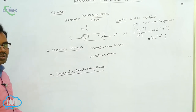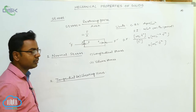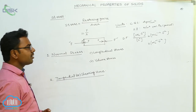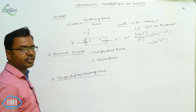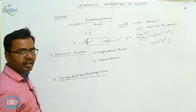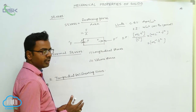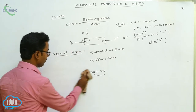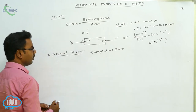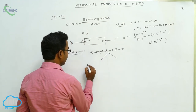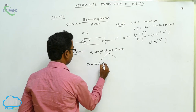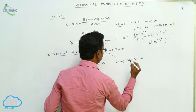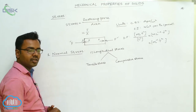Normal stress is the stress acting perpendicular to the surface of the body, divided into longitudinal stress and volume stress. Longitudinal stress acts along the length of the body, and volume stress acts on the volume of the body. Longitudinal stress is further of two types: tensile stress and compressive stress.